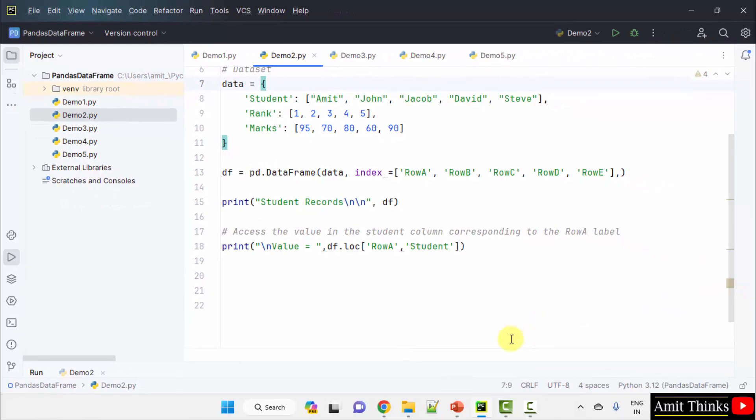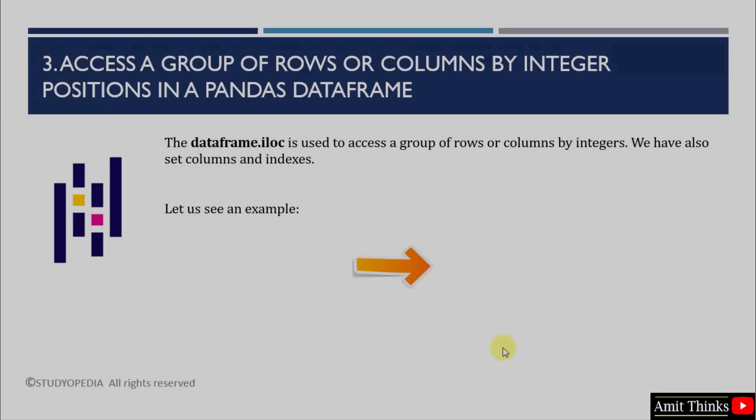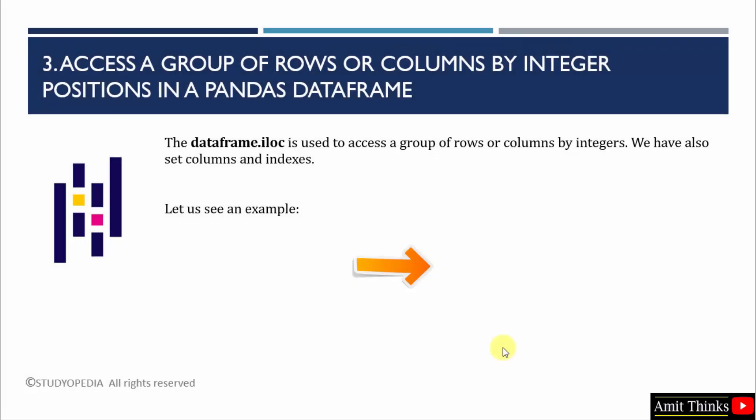Now let us see the third example. In the third example, we will access a group of rows or columns by integer positions in a pandas data frame. For that, we will be using the dataframe.iloc attribute. Before, we used loc — now we will use iloc.